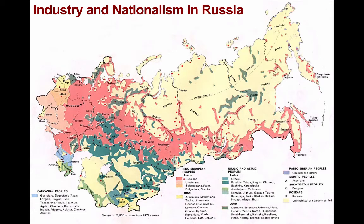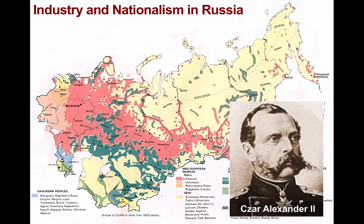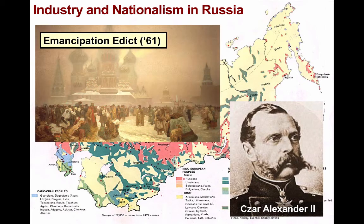Now let's turn our attention to Russia, a region that had lagged far behind the process of industrialization. Tsar Alexander II succeeded Nicholas I of the Romanovs in 1855. He realized Russia had to industrialize, and this was virtually impossible with 25 million peasants still living in bondage to landlords. So in 1861, he signed the Emancipation Edict, providing the serfs with freedom and some land. In turn, the freed serfs had to pay taxes to compensate the nobles.